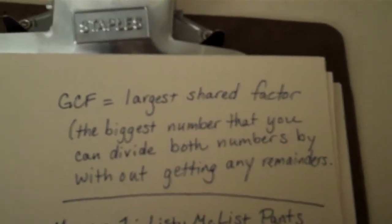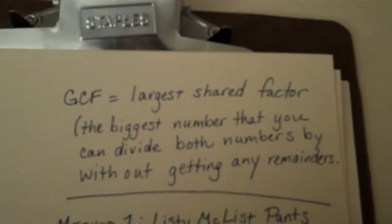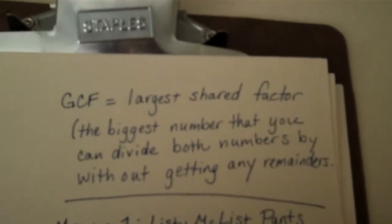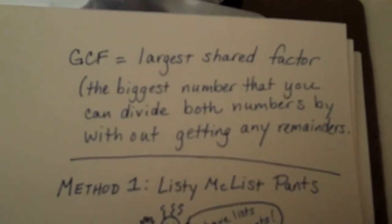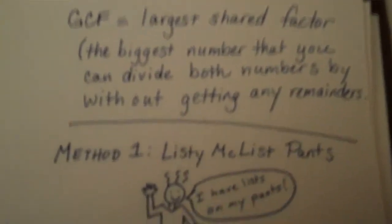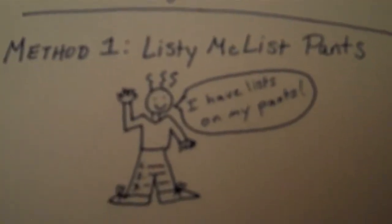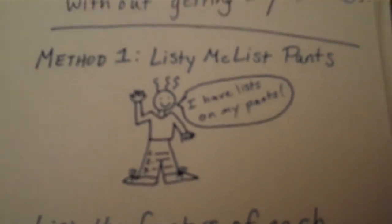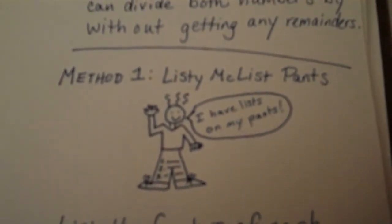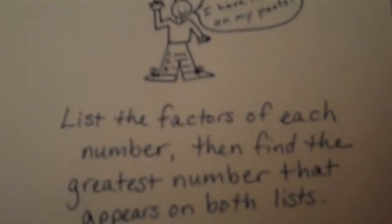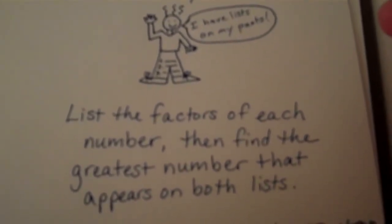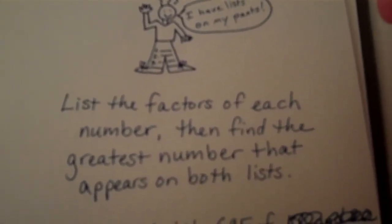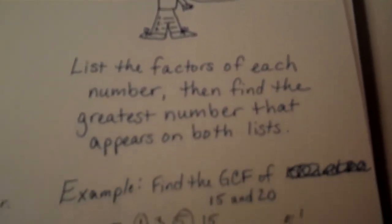We have two methods for finding the GCF. Method one is called Listy McListpants — I have lists on my pants. To use Listy McListpants's method, you list the factors of each number, then find the greatest number that appears on both lists. Here's an example.